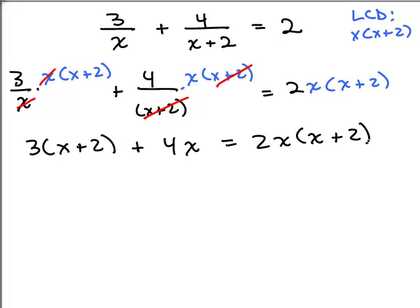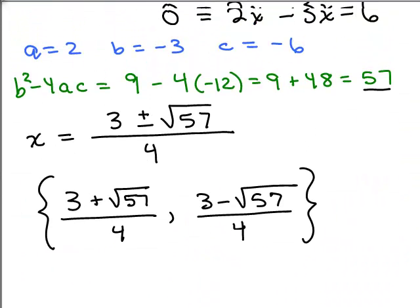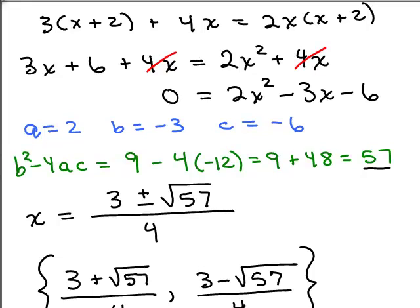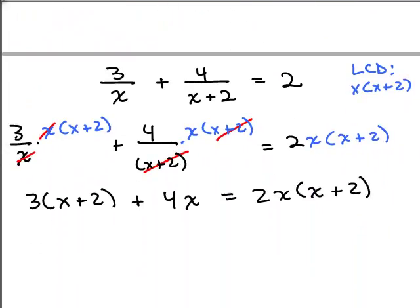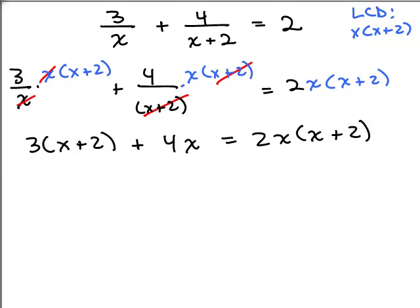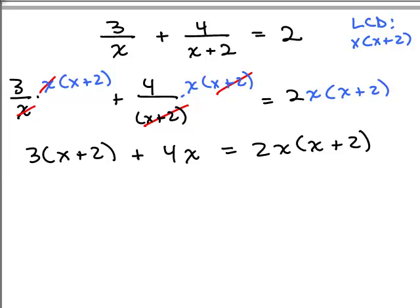So I get 3 times x plus 2, 4 times x equals 2x times x plus 2. So I get exactly the same thing as I got up here. 3 times x plus 2 plus 4x equals 2x times x plus 2. So from this point, everything is the same.